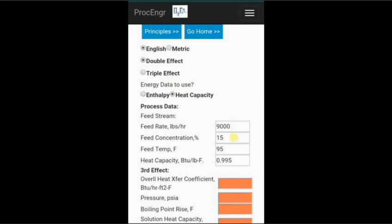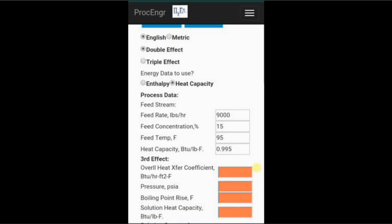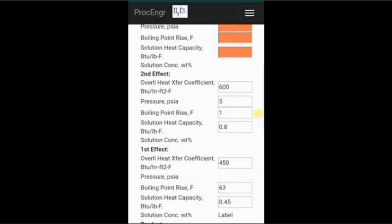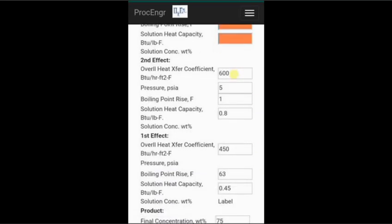Now, we will put this data into our evaporation calculator as follows. The feed conditions of rate, concentration, and heat capacity. The third effect is not applicable and therefore disabled. In the second effect, we have the overall heat transfer coefficient, designated pressure, assumed boiling point rise, and heat capacity.